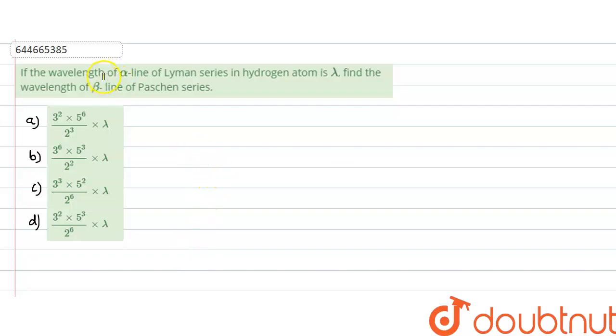In this question, the wavelength of the alpha line of the Lyman series in a hydrogen atom is given as lambda. We need to find the wavelength of the beta line in the case of the Paschen series.